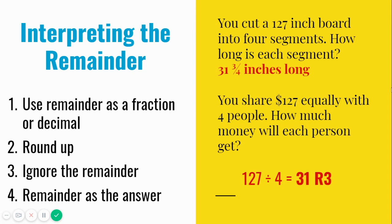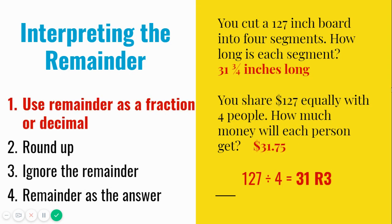Here's another example. You share $127 equally with 4 people. How much money will each person get? As we divide the bills, we have $31 for each person, but there are 3 remaining dollars left over. We don't want any leftover money, so we need to divide the $3 into 4 parts. I know that 4 quarters equals $1, so there are 12 quarters in $3. If we divide the 12 quarters among 4 people, then each person would get 3 quarters, which equals $0.75. So $31.75 would go to each person. Money is a good example of when the remainder could be used as a decimal. Don't worry too much right now about converting a fraction into a decimal, but notice that decimals can be used to represent the remainder as part of the answer.